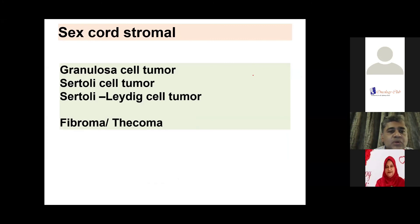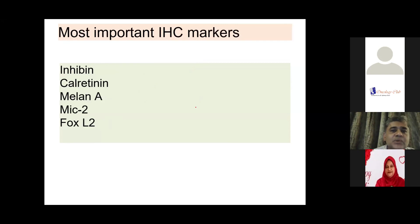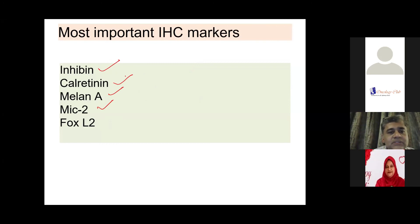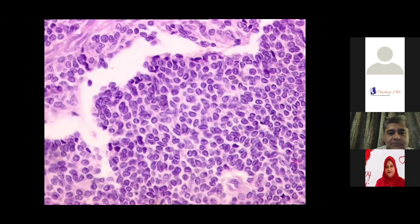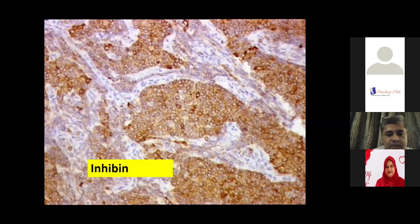Last is the sex cord stromal tumor — not very common, but we do see granulosa cell tumor to a reasonable extent. Sertoli tumor and Sertoli-Leydig are very low in numbers, and fibroma and thecoma are benign tumors. The most important immunohistochemical markers to pick up these tumors are inhibin, calretinin, MYC2 (SF-1), and melanin (MART-1) — these come positive in sex cord stromal tumors, and a combination of these is necessary. This is a good example of granulosa cell tumor with nuclear grooving — the coffee bean appearance of the nuclei — and they are strongly positive for inhibin staining.